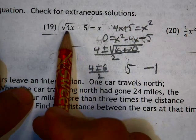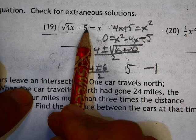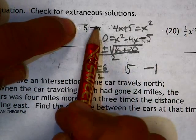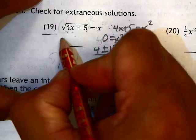Plugging in 5. 4 times 5 is 20. 20 plus 5 is 25. The square root of 25 is 5, and x was 5, so that one's good. So one answer is 5.